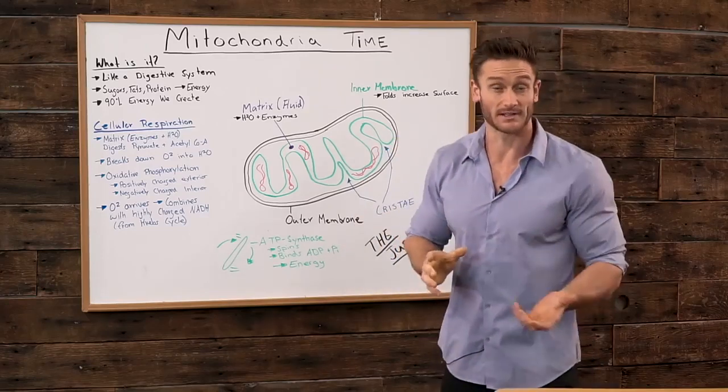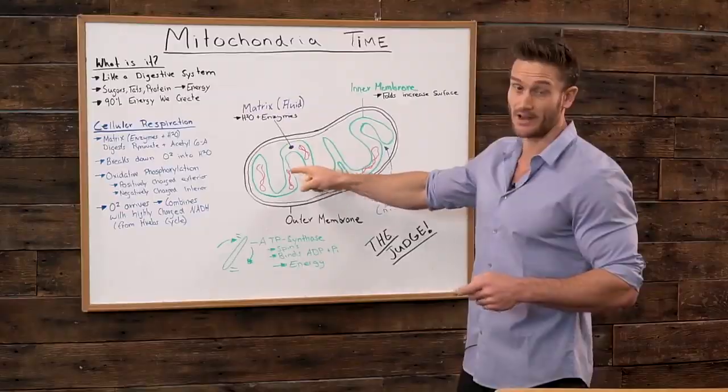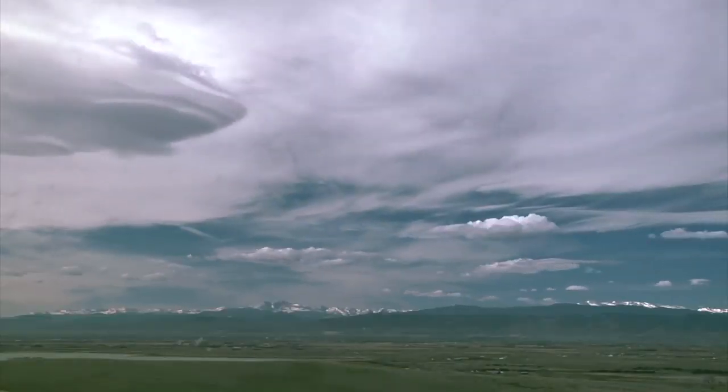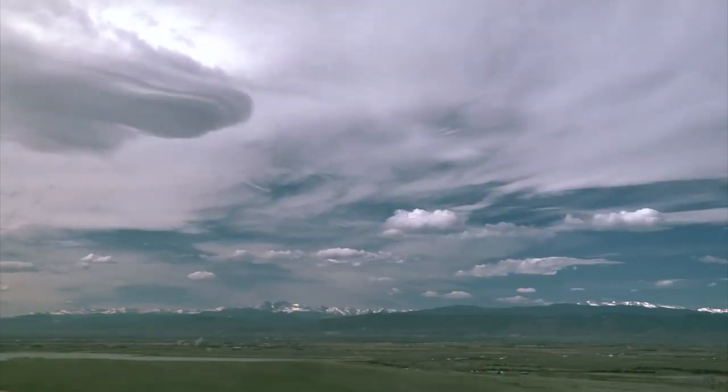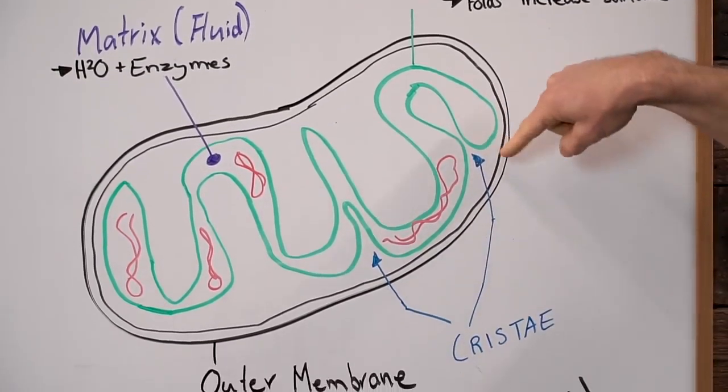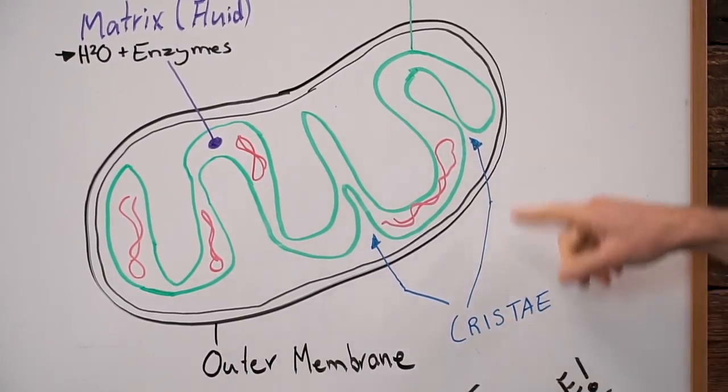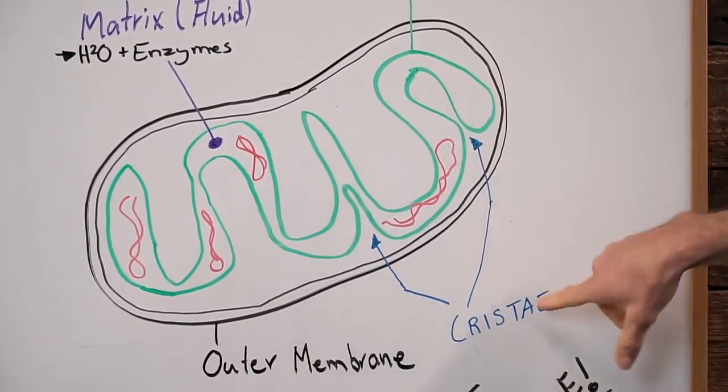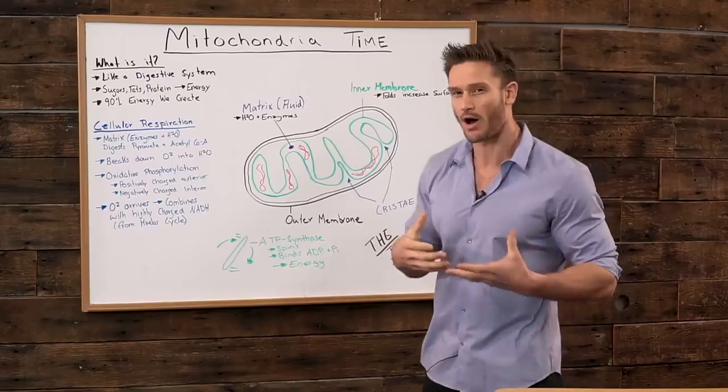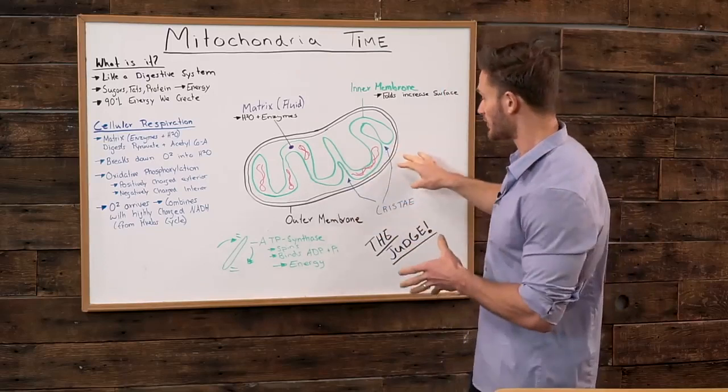All the energy is created there on the inner membrane. That's where the combination of oxygen takes place. That's where everything is actually created. These folds increase that surface area. This, known as the cristae, is basically just the characteristic of the squiggles. The little curves like here are called the cristae. They're not really a metabolic function, just terminology that explains how it's structured.